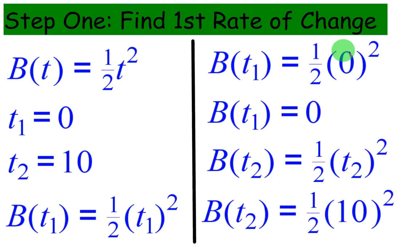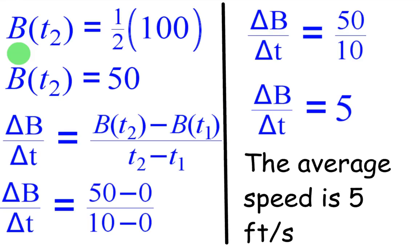Now, remember, when you find the average rate of change, you plug into the original. So 0 means the car hasn't gone anywhere after 0 seconds. Then when we plug in 10, we get 50. So the car's gone 50 feet after 10 seconds.